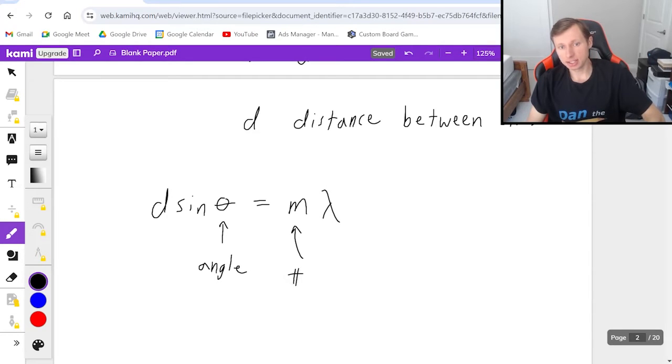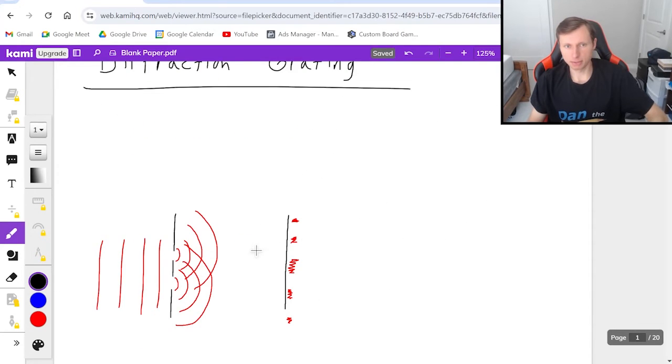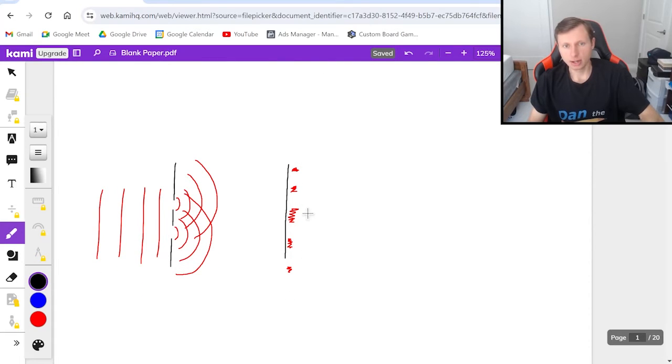m is, I like to say, the number of bright fringes. And so for instance, if I scroll back up to my original picture, and I look at this pattern right here, the middle one is always m equals zero, you always start counting at zero.